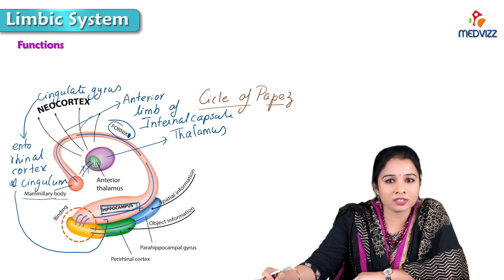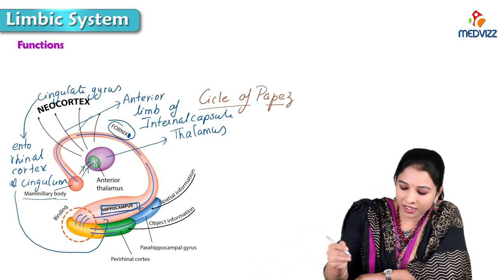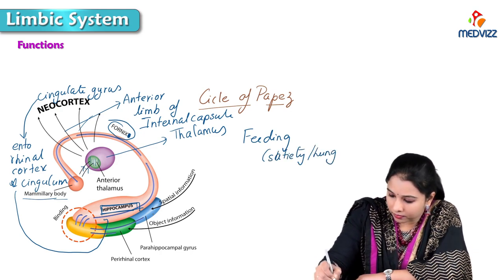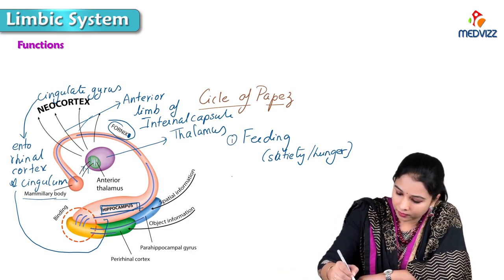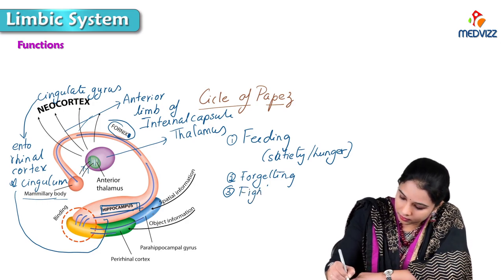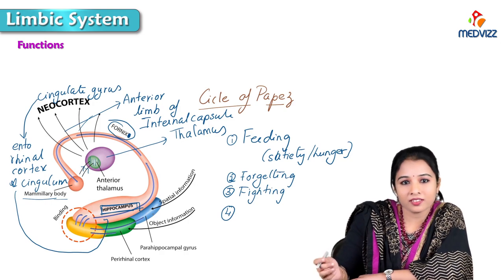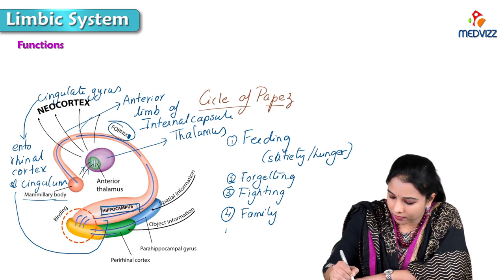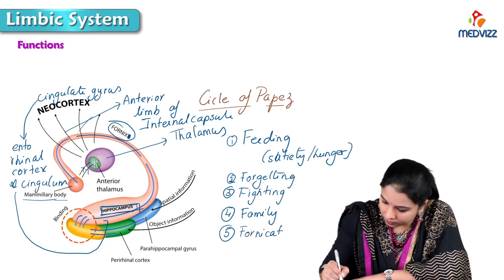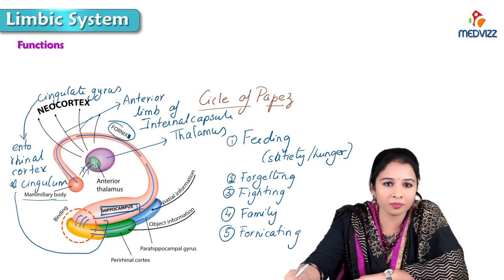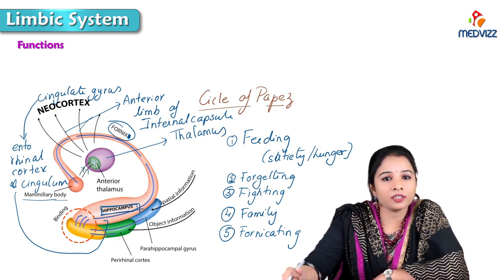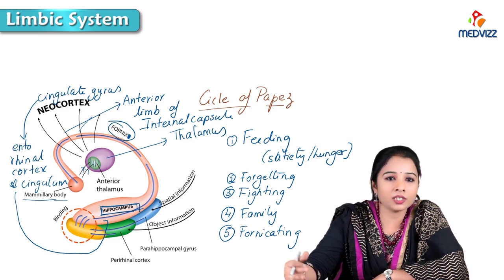A quick way to remember the functions of the limbic system is to think about the 5 F's: Feeding (satiety or hunger), Forgetting (memory), Fighting (emotional response), Family (sexual reproduction and parental instincts), and Fornicating (sexual arousal). Sexual behaviour is mainly under the control of the limbic system, and all these F's help you remember its functions.